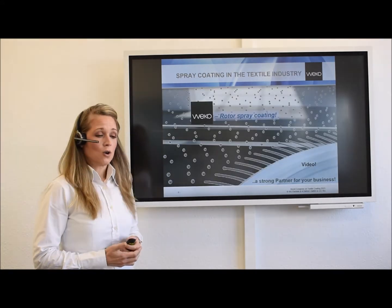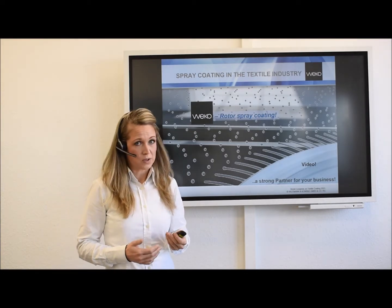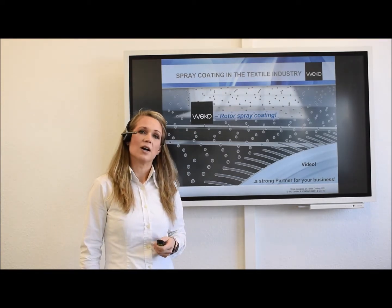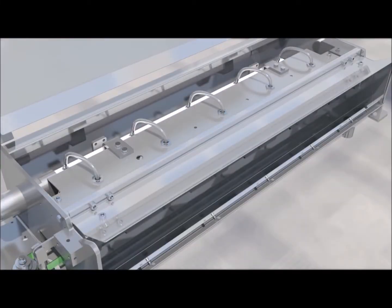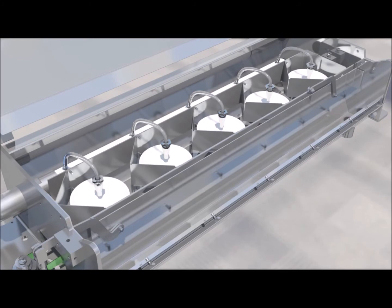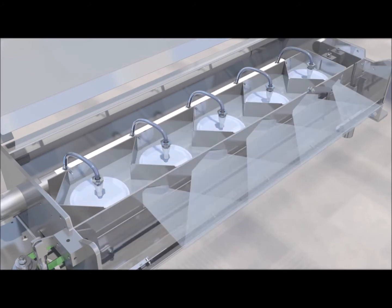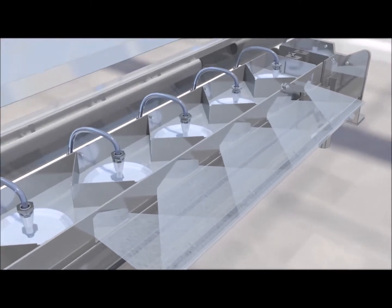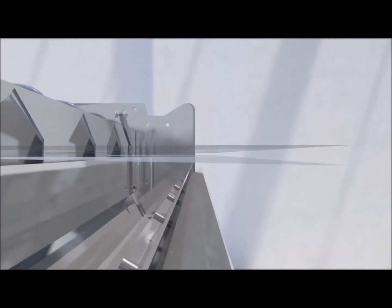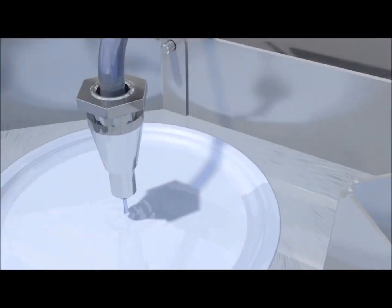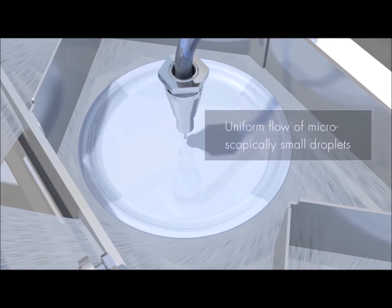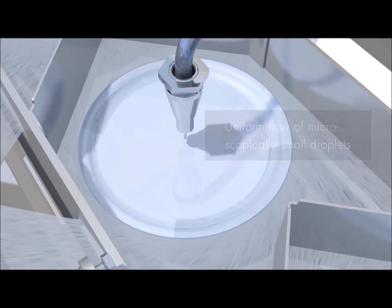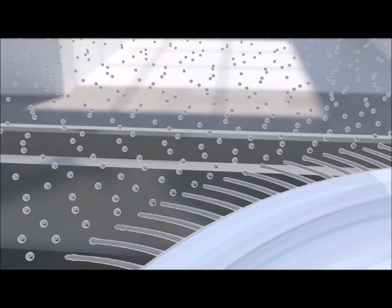To show you how the system works, here is a short video. Starting the spinning of the rotors by a driven belt, the discs are supplied by the application liquid. As soon as the shutter is open, the spray starts penetrating the web. Every rotor is supplied with a certain amount of liquid to form a uniform flow of micro droplets that fly onto the web material.